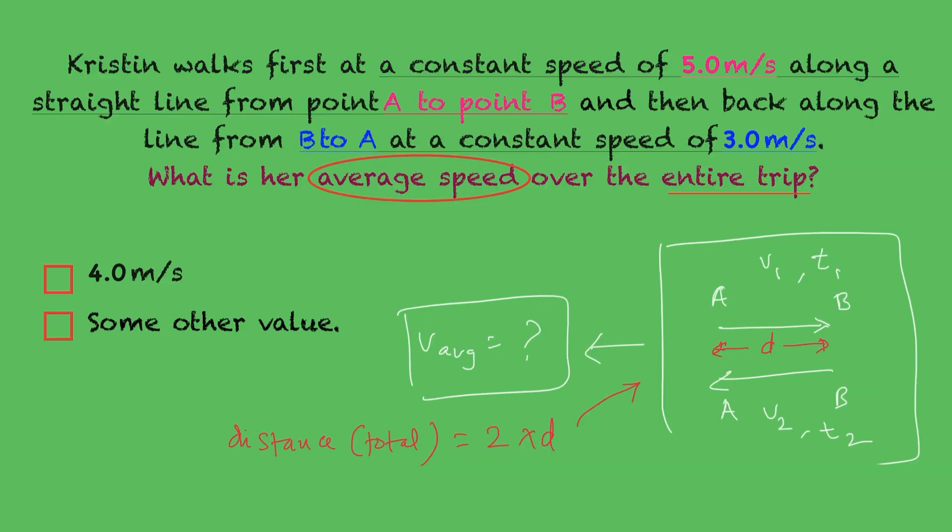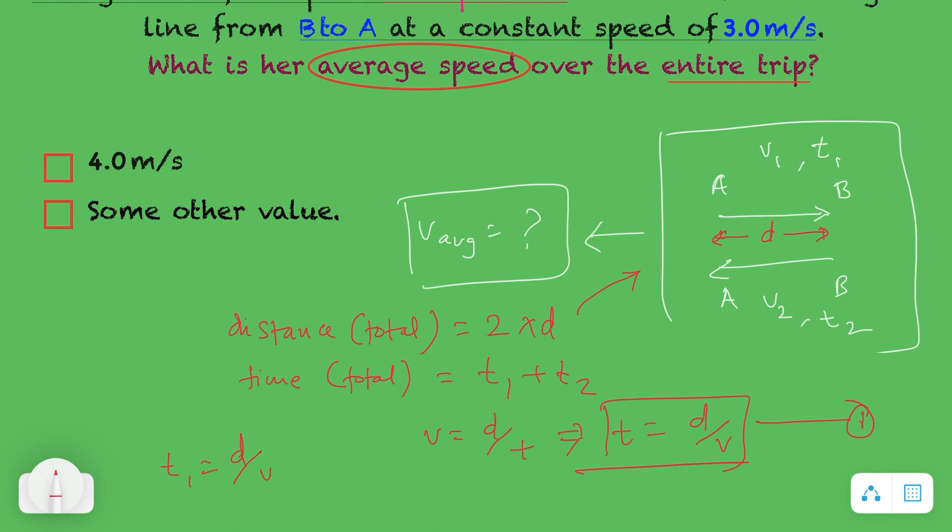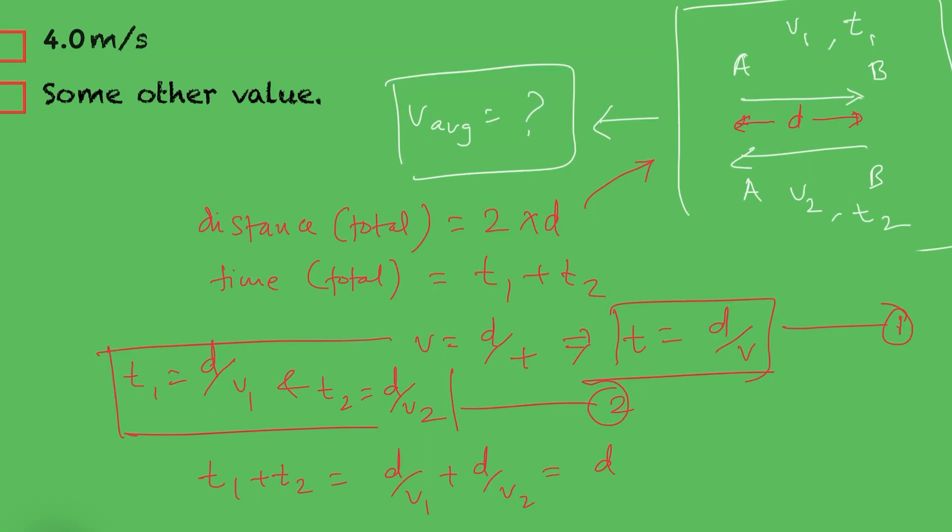Total time can be estimated from speed equations, V equals to D divided by T, more specifically, T1 and T2 for round trip. T1, when Kristen goes from A to B equals to D divided by V1. And T2 equals to D divided by V2 when she returns. Then solving for total time, which is equal to T1 plus T2 equals to D divided by V1 plus D divided by V2.